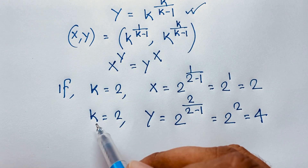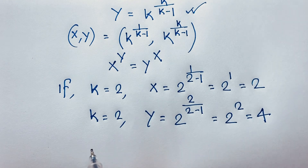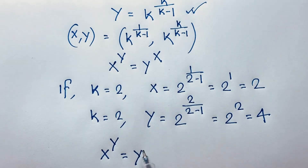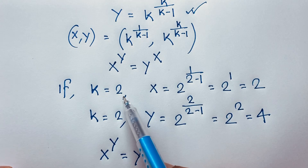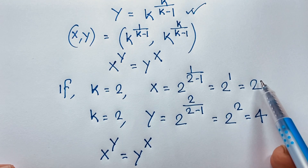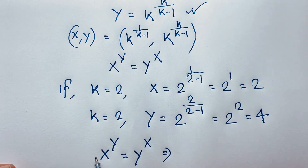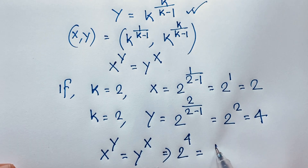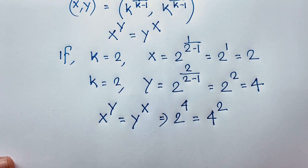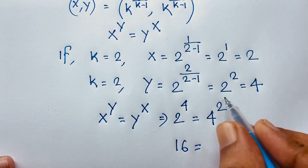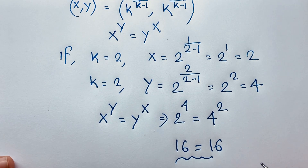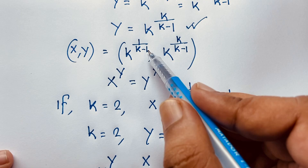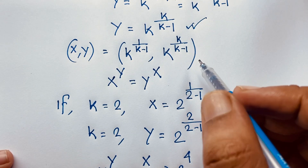So we find x equals 2 and y equals 4. You can see that 2 to the power 4 is 16, and 4 to the power 2 is also 16, so left-hand side equals right-hand side. This confirms our final answer: x is equal to k to the power 1 over k minus 1, and y is equal to k to the power k over k minus 1.